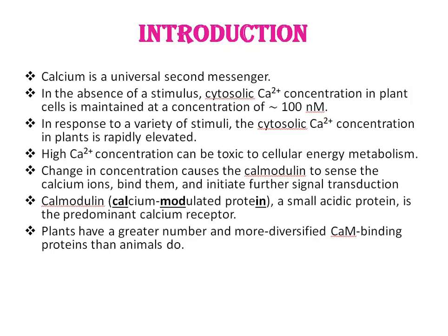Once bound to calcium ion, Calmodulin acts as part of a calcium signal transduction pathway by modifying its interactions with various target proteins, such as kinases or phosphatases. Plants have a greater number and more diversified Calmodulin-binding proteins than animals do.